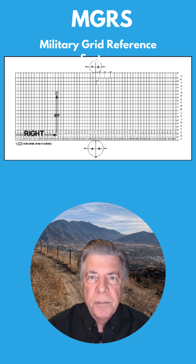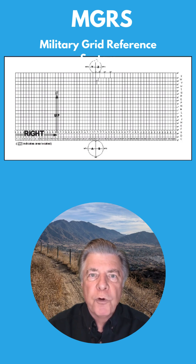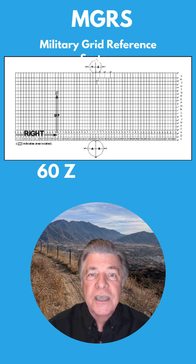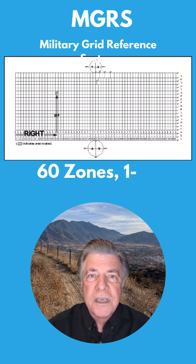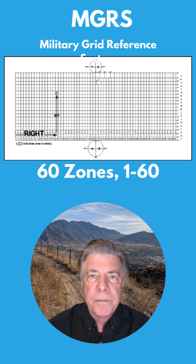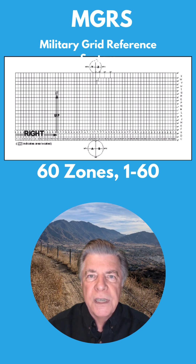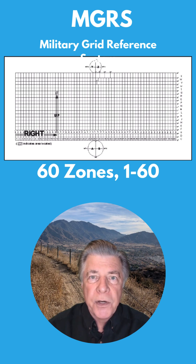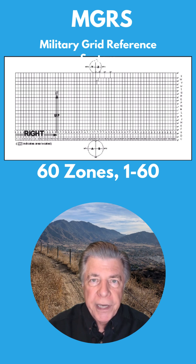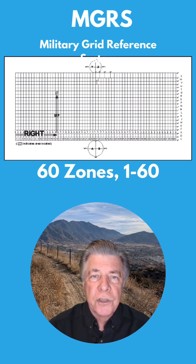The Earth's surface between 80 degrees south and 84 degrees north is divided into 60 north-south zones. These zones are numbered from west to east, 1 through 60. They are 6 degrees apart — 60 zones, 360 degrees around the Earth.